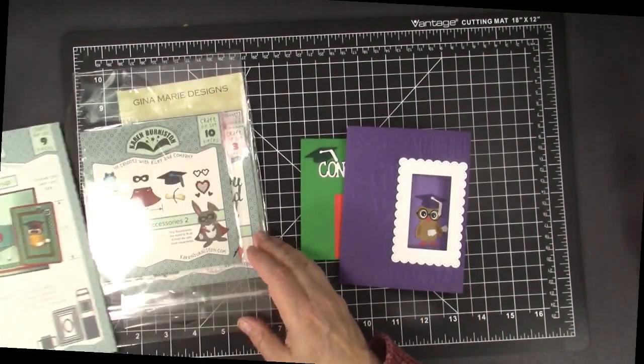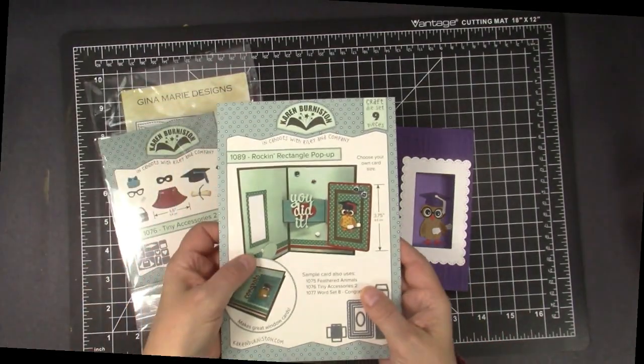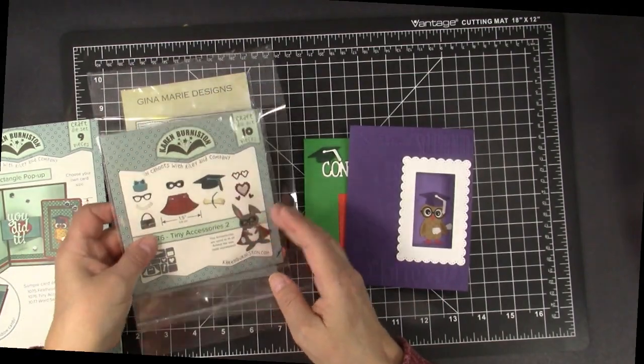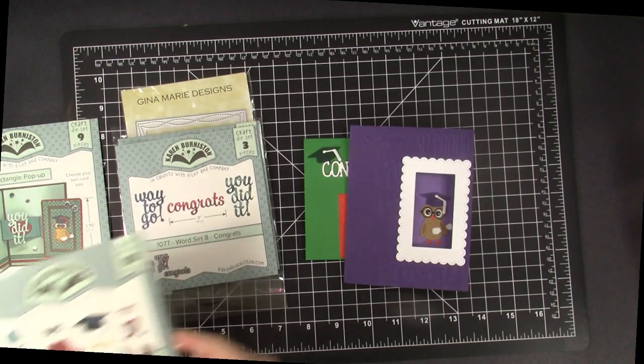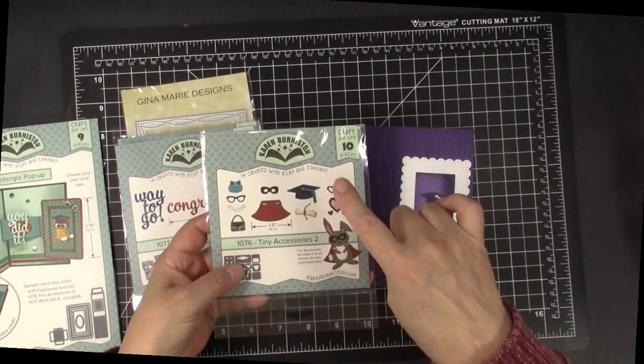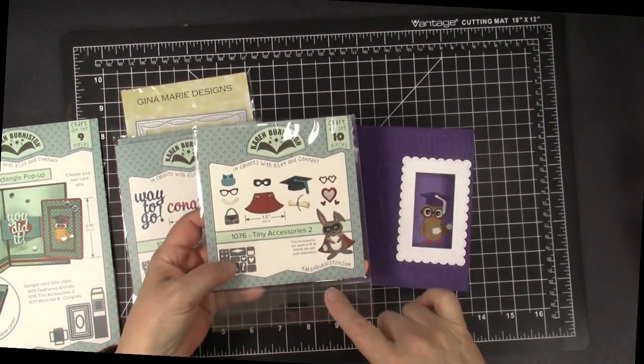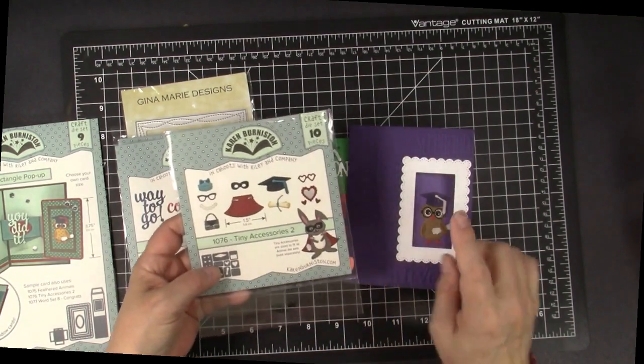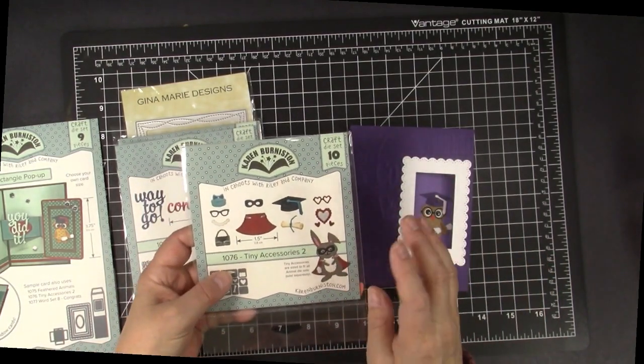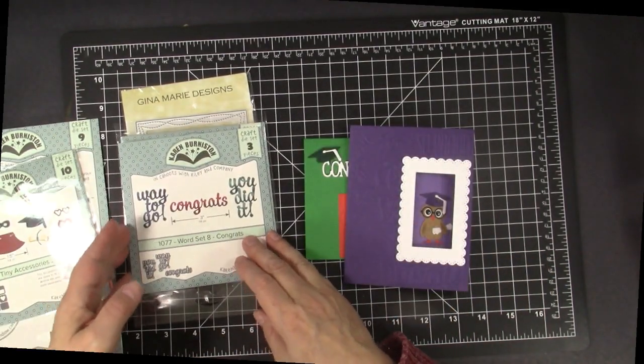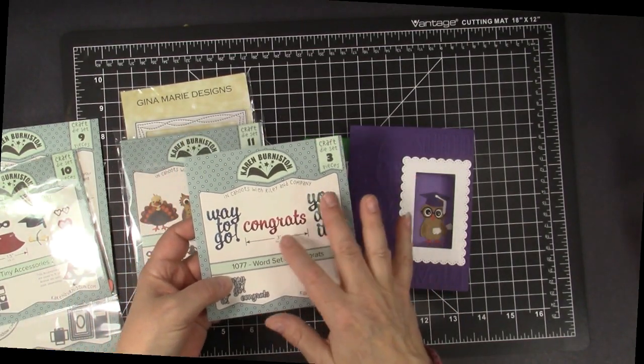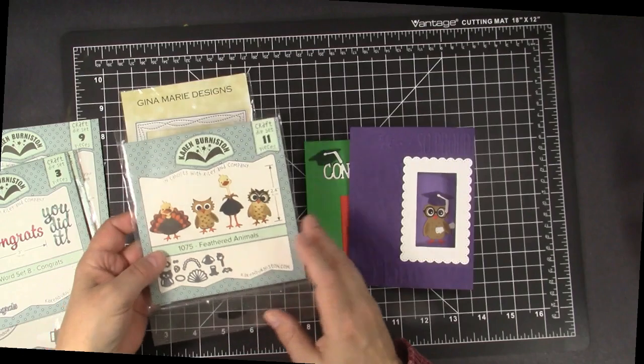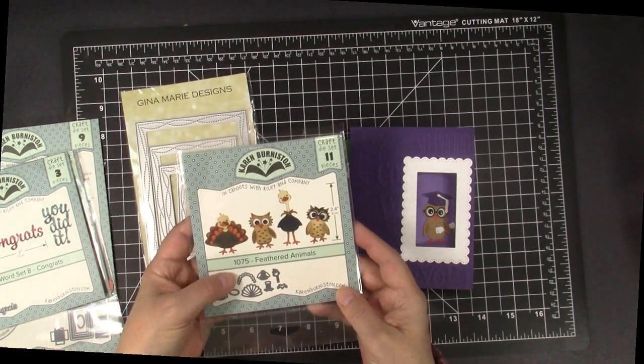On those cards, in addition to the Rockin' Rectangle Pop-Up, I used the Tiny Accessories No. 2 for the graduation hat and glasses I think are from the other set. This is the new word set 8, Congrats, so you did it, Congrats.